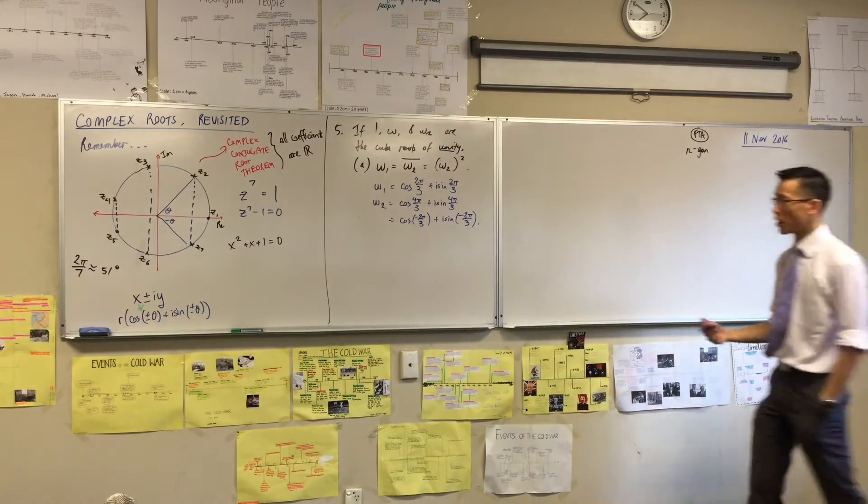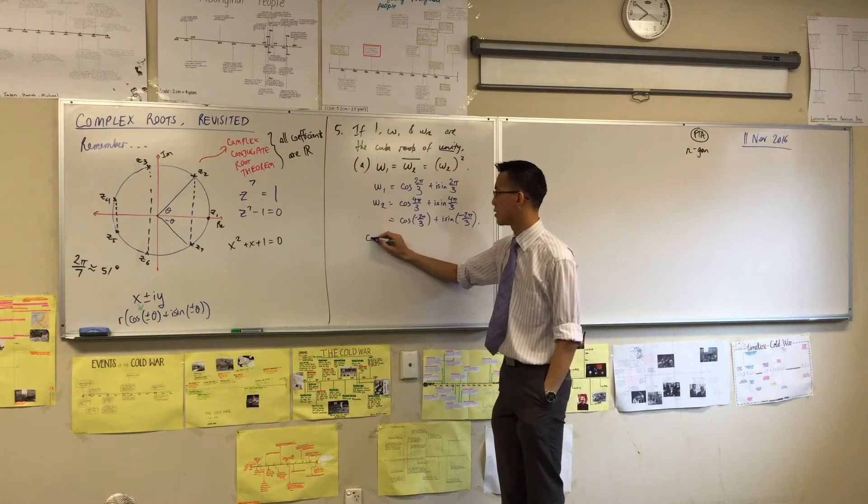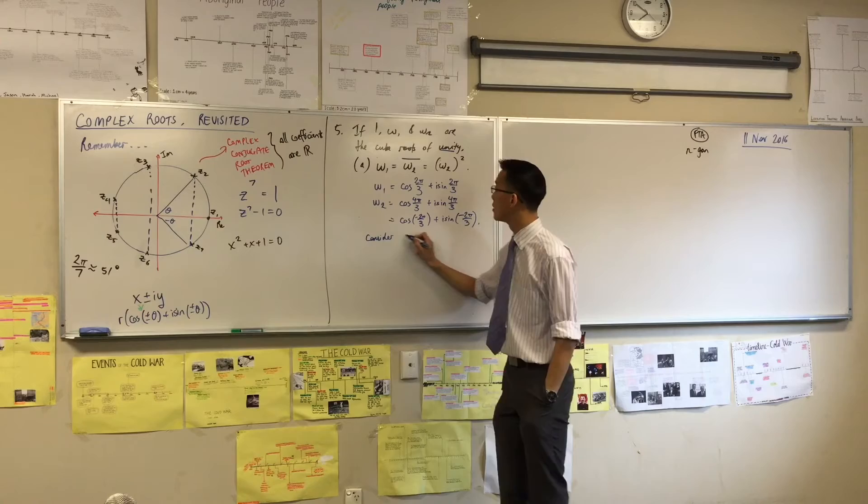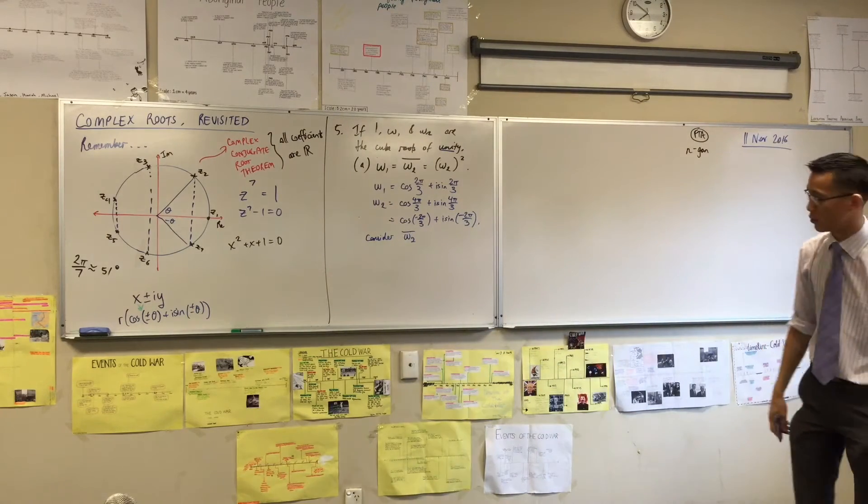So it's the same number, right? I've just gone there by a different path. Wonderful. So let's have a look. Can we use these to say these? Well, let's have a look at, consider the conjugate of W2. The conjugate of W2.